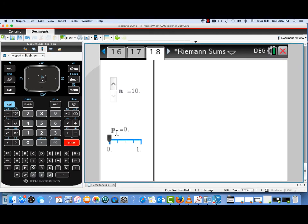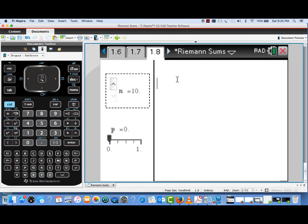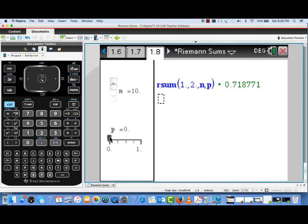Now I'm going to a new page here where I've actually set up a notes page, and there's my rsum in a math box. But what I've done now is let n, the number of sub-intervals, and p, the choice of point, I've attached those to sliders. So we can vary from left to mid to right endpoints. We can also change the number of sub-intervals and watch that value change on the fly.